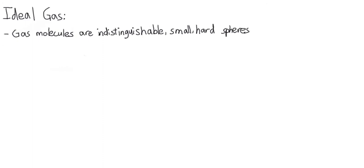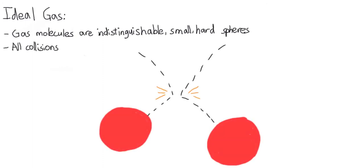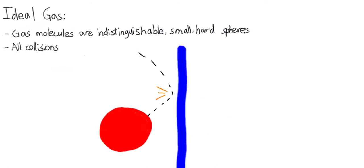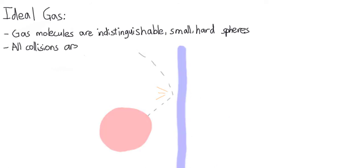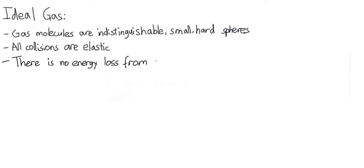In an ideal gas, we make the assumptions that gas molecules are indistinguishable small hard spheres. All collisions, either between two particles or between a particle and a wall of a container, are elastic. There is no energy lost from collisions or friction.